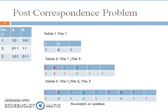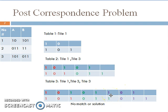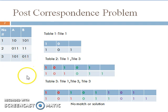The only remaining choice is placing tile 3 after tile 1. When we do that we get an extra 1 at the bottom sequence. To match that we consider tile 3 again, but we get yet another extra 1 at the bottom. This clearly shows there is no match or solution — the problem will always have an unmatched item, leading to an infinite sequence. Therefore we conclude that this problem has no solution.